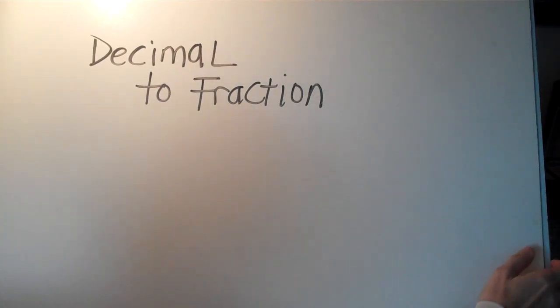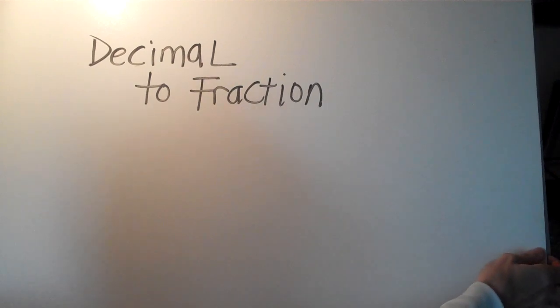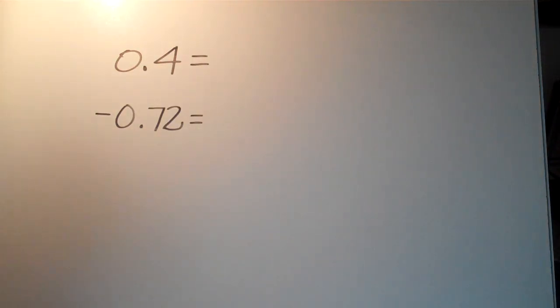Okay, in this video we're going to talk about changing a decimal to a fraction and we have two examples right here. The first one says 0.4, we have that decimal and we want to make it a fraction.